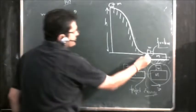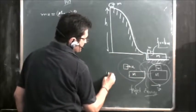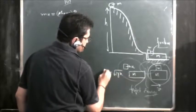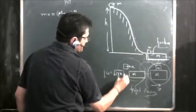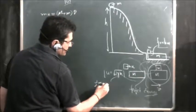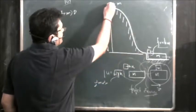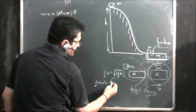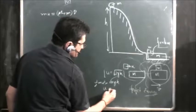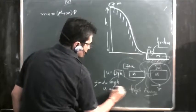The velocity u when the mass comes down is equal to √(2gh). This comes from energy conservation: the kinetic energy is half mu² and the potential energy was mgh, so u = √(2gh).